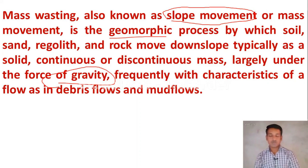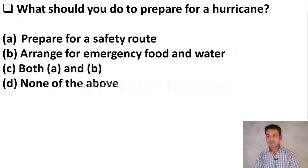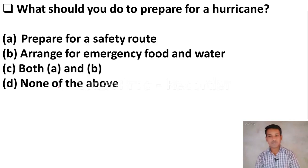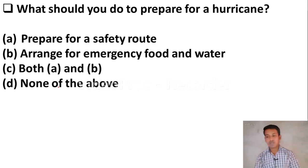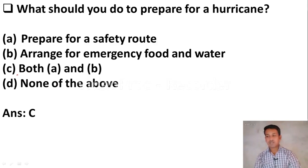Next question: what should you do to prepare for a hurricane? Option A, prepare for a safety route. Option B, arrange for emergency food and water. Option C, both A and B. Option D, none of the above. The right answer is both A and B.